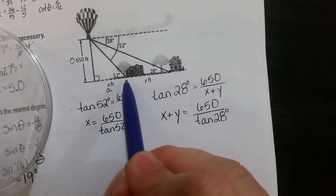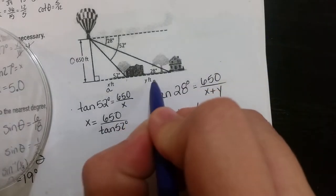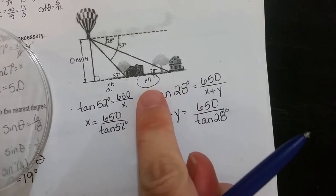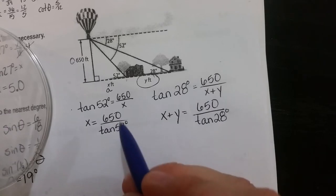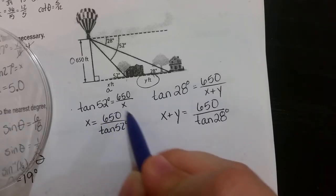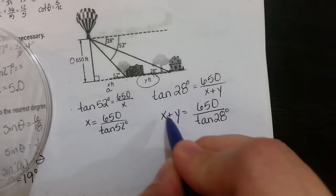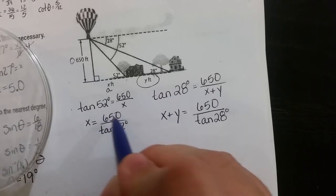And remember, I want the distance between the two houses. So my goal from the beginning was really just to find Y. So basically what I'm going to do now is I'm going to take this thing and I'm going to plug it in for X.